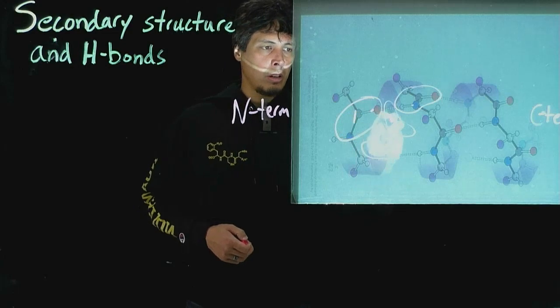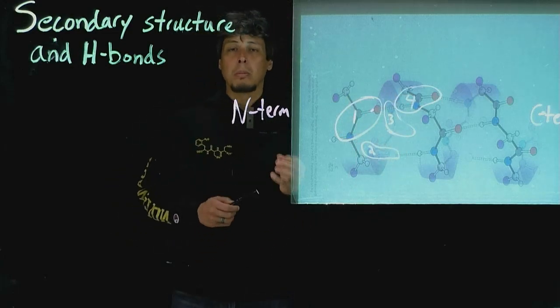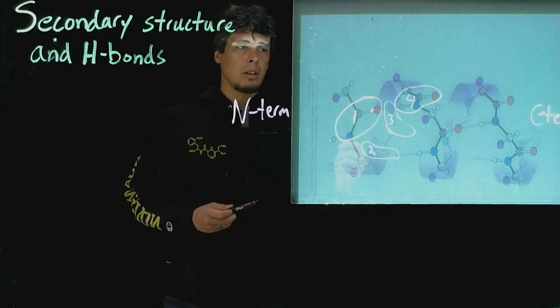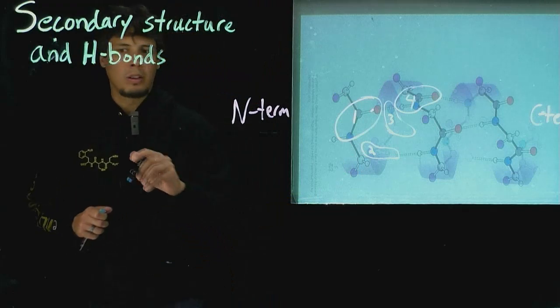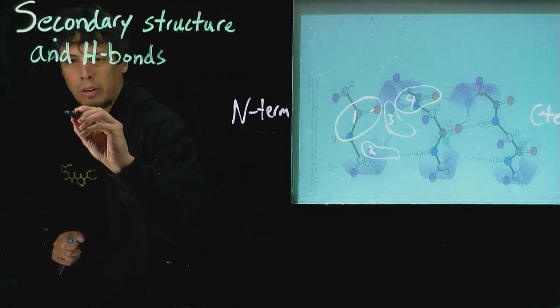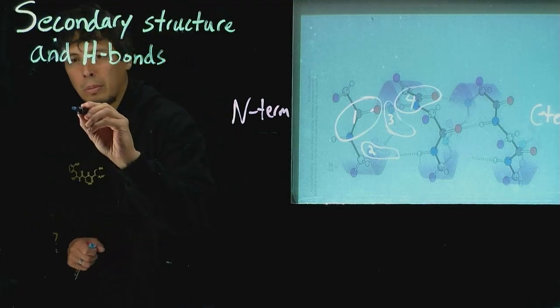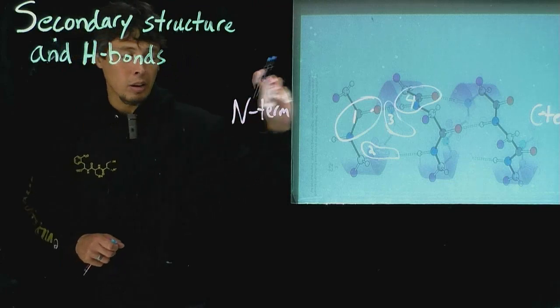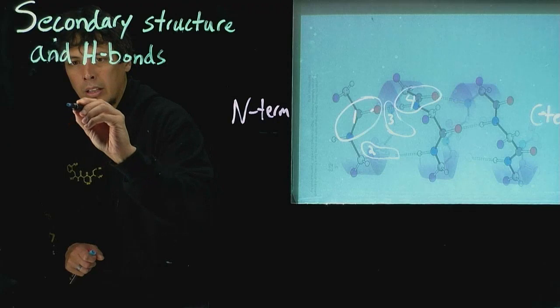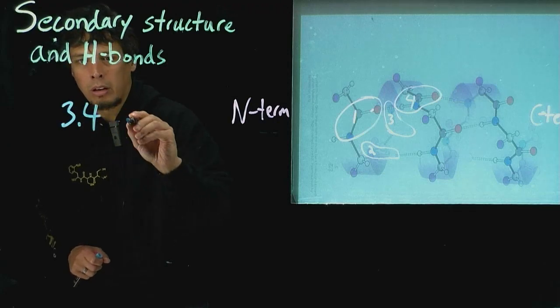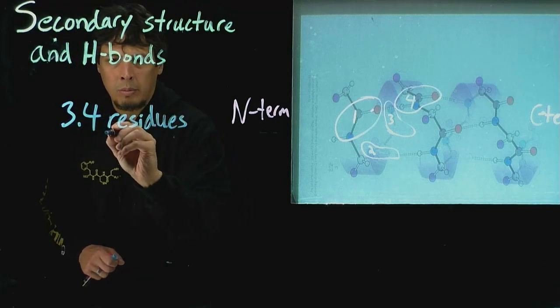So we have one, two, three, four peptide bonds are the minimum number that are required in order to do this. What we actually get here is it's 3.4. If we count the number of amino acid residues instead to form one peptide bond, it averages out over the length of the entire helix is 3.4 residues per turn.